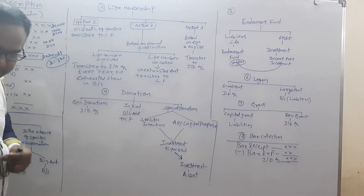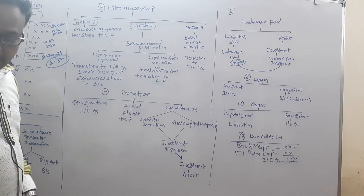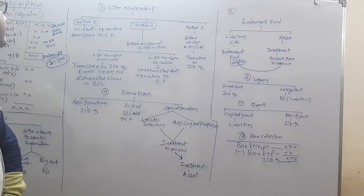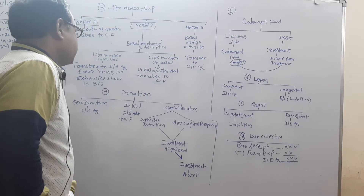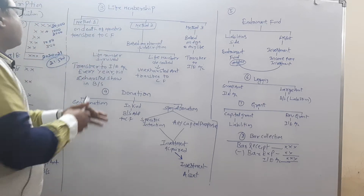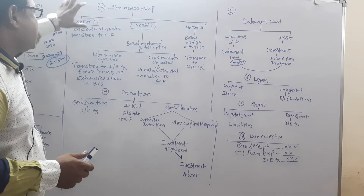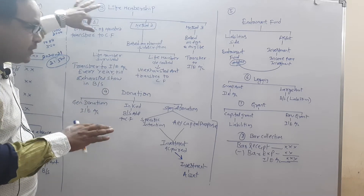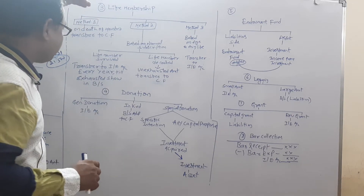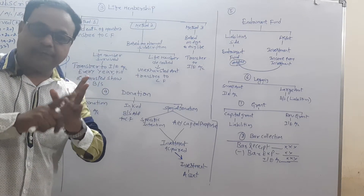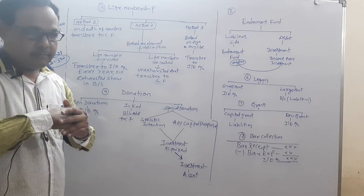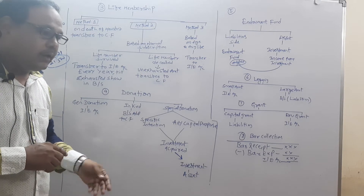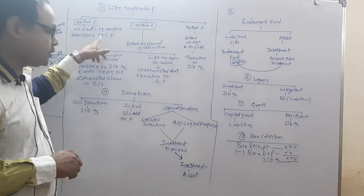Next: life membership fees. Method number one — on the death of the member, the life membership fees are transferred to capital funds. Until then, it remains in the balance sheet under the header 'life membership fees.' On death of the life member, it is transferred to capital funds.